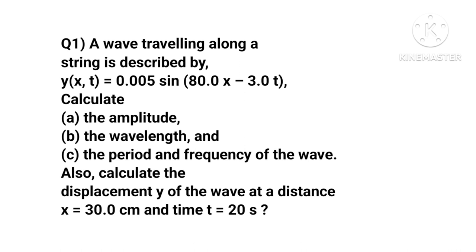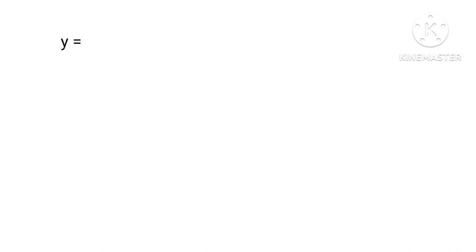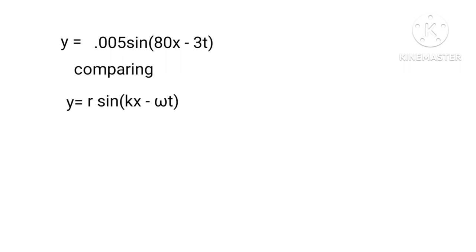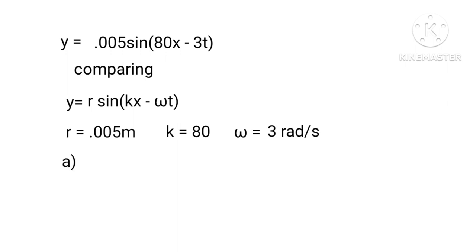Now we shall try some numericals. The first one: a wave traveling along a string is described by y(x, t) = 0.005 sin(80.0x - 3.0t). Calculate (a) the amplitude, (b) the wavelength, and (c) the period and frequency of the wave, and the displacement y at x = 30.0 cm. Comparing with y = R sin(kx - ωt), we get amplitude R = 0.005 m = 5 mm, k = 80 rad/m, and ω = 3 rad/s.